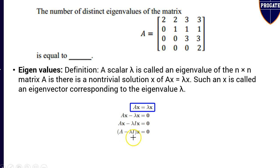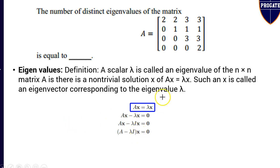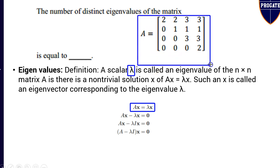If you rearrange the terms, you get (A minus lambda I) times x equals 0. Here the scalar lambda is called the eigenvalue and its corresponding vector x is called the eigenvector. The scalar lambda is called the eigenvalue for the given square matrix.